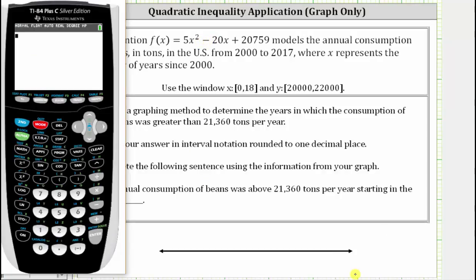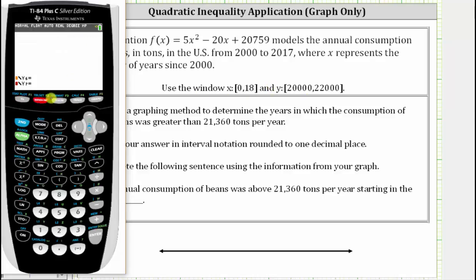We first enter the function by pressing y equals. I've already entered the function to save some time. Now we will adjust the window to the recommended window stated here. We press window — the x-axis goes from zero to 18 by ones, and the y-axis goes from 20,000 to 22,000 by 50s. Now let's go ahead and press graph.